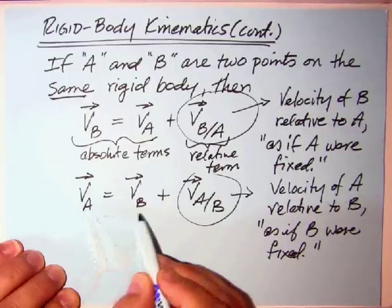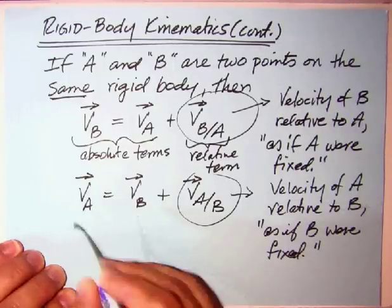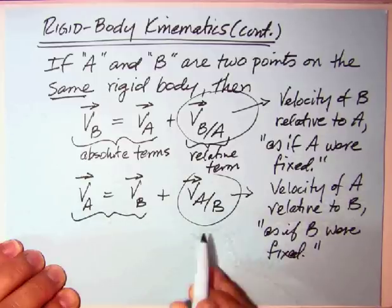The velocity of A equals the velocity of B. Again, those are the two absolute terms. And then our relative term, V A slash B.